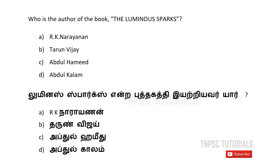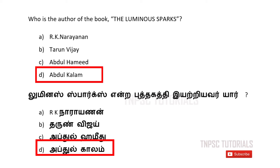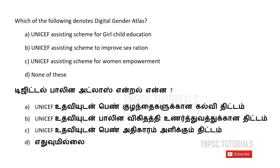Fourth one: Who is the author of the book 'The Luminous Sparks'? A) R.K. Narayanan. B) Tarun Vichai. C) Abdul Hamid. D) Abdul Kalam. The answer is D — Abdul Kalam. Fifth one: Which of the following denotes Digital Gender Atlas?